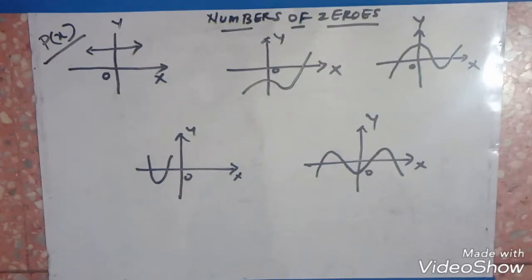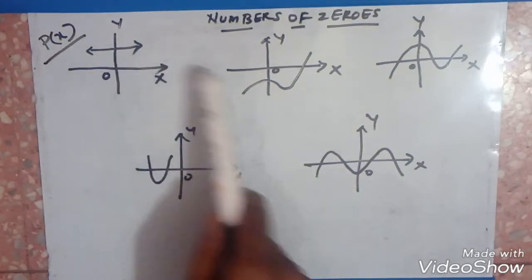Welcome to the Pace Academy channel. In this class we are going to learn about how to find the number of zeros in each case of this graph in which we have the polynomial P of X represented by these graphs. The graphs of y is equal to P of X.